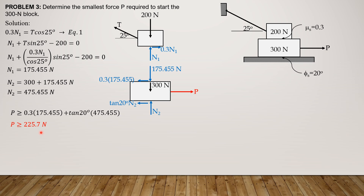The smallest force P required to start the 300-newton block is 225.7 newtons; any value greater than this will cause the block to move to the right. Thank you for watching — I hope you were able to understand the explanations and solutions to these three problems. See you in future videos!